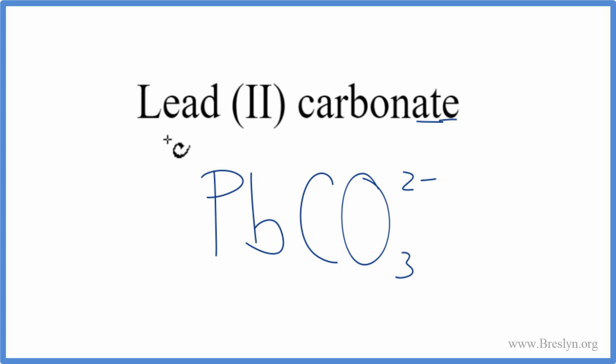We have some help because in the name we have this lead (II), and that II means that the lead is 2+. So these charges, they need to add up to 0 to have a neutral compound, and lead (II) carbonate, that's a neutral compound. So we have 2+, 2-, that adds up to 0. We have what we say a net charge of 0.